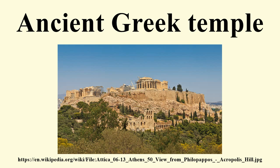They are the most important and most widespread building type in Greek architecture. In the Hellenistic kingdoms of Southwest Asia and North Africa, buildings erected to fulfill the functions of a temple often continued to follow the local traditions. Even where a Greek influence is visible, such structures are not normally considered Greek temples. This applies, for example, to the Greco-Parthian and Bactrian temples, or to the Ptolemaic examples, which follow Egyptian tradition. Most Greek temples were oriented astronomically.